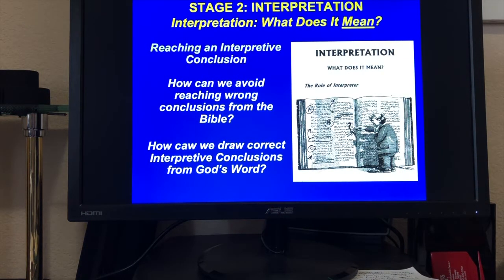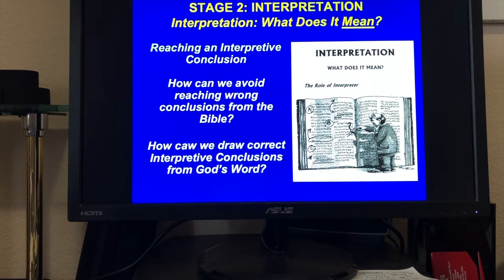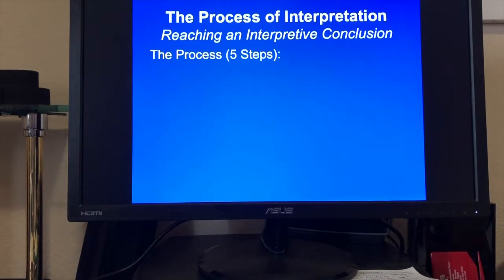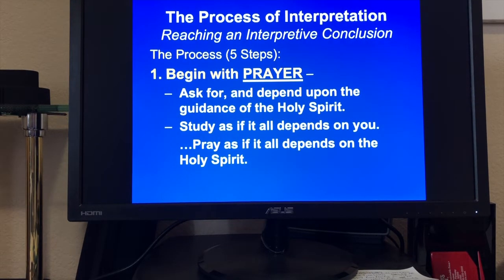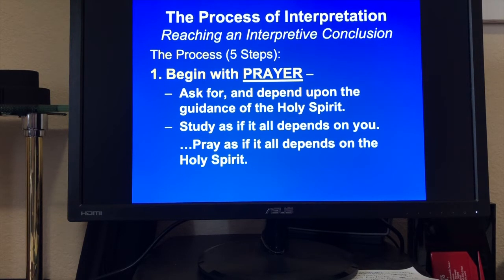As we move into stage two of interpretation — what does it mean? — we're ultimately reaching an interpretive conclusion. We've talked about word studies and asking questions in four specific areas. Now we're looking to reach an interpretive conclusion. The process is five steps. Number one, as always, we begin with prayer. Apart from him we can do nothing, and the Holy Spirit will guide us in all truth. Ask for it and depend on the guidance of the Holy Spirit. Study as if it all depends on you, but pray as if it all depends on the Holy Spirit. Because the natural man doesn't understand these things — they're spiritually discerned.